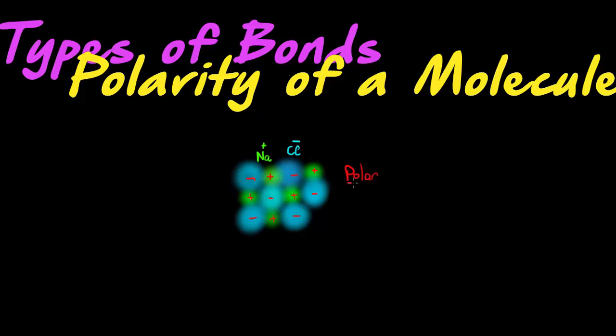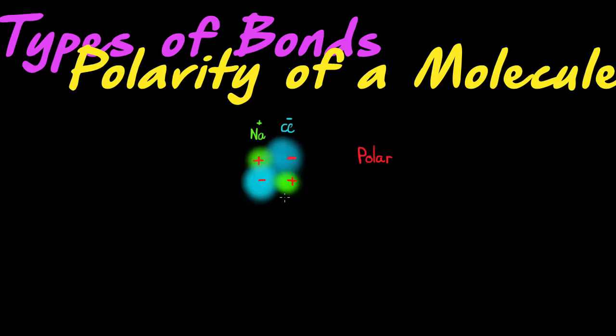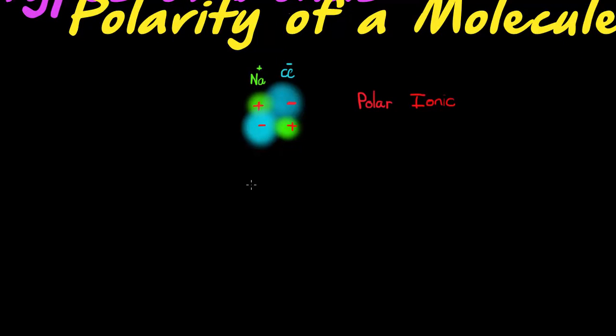So that is a polar, an example of a polar molecule. This is an ionic bond you might have recalled. So an ionic bond is the strongest type of polar molecule that I can find.